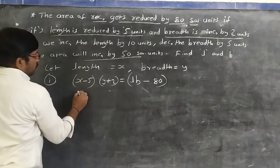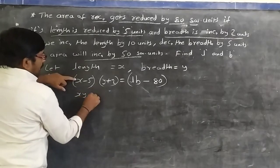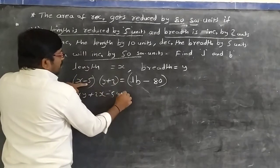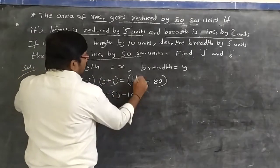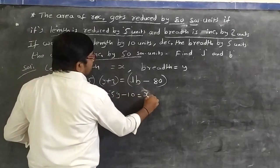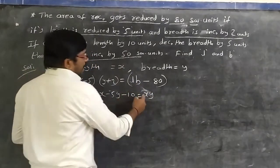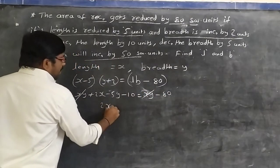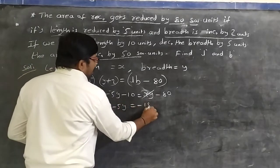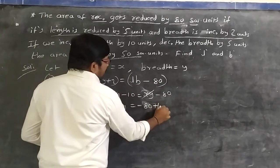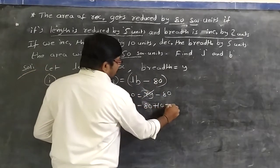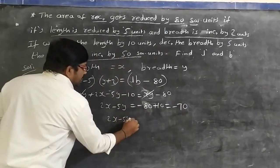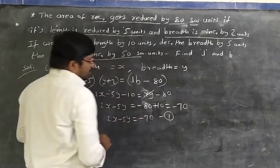Expanding: xy + 2x − 5y − 10 = xy − 80. The xy terms cancel. So 2x − 5y − 10 = −80, which gives 2x − 5y = −80 + 10 = −70. That is equation 1.